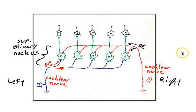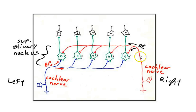Now let's take the case of sound from 90 degrees to the right — maximum delay. The sound strikes the right ear first, so action potentials in the right nerve get a head start. The right ear action potentials travel all the way to cell one by the time the left ear's delayed action potentials also arrive at cell one, giving cell one simultaneous activity. Cell one then activates a motor neuron that turns your head 90 degrees to the right to localize the sound.